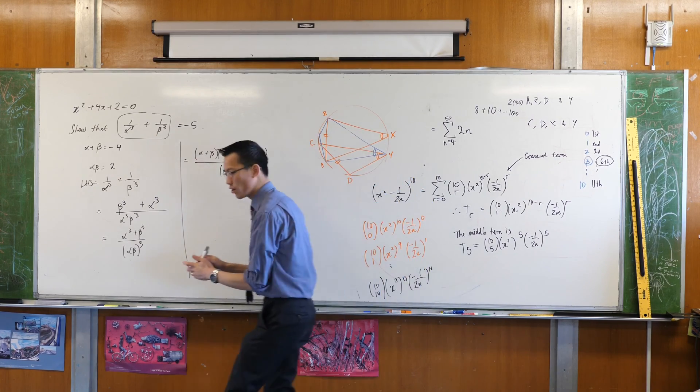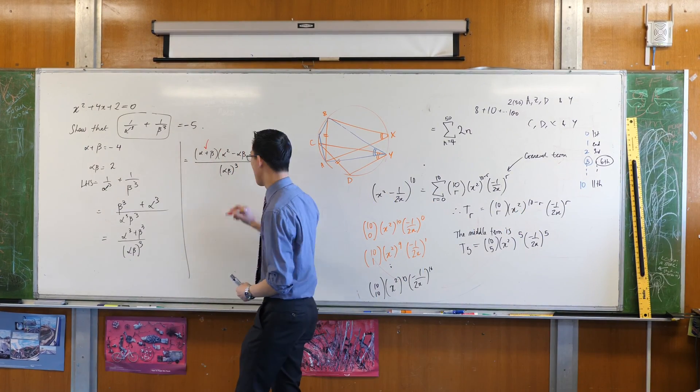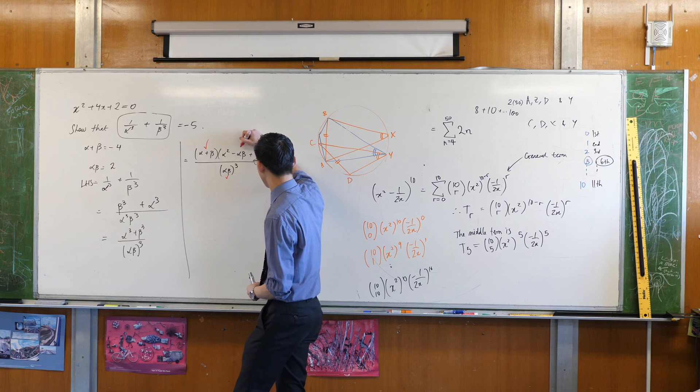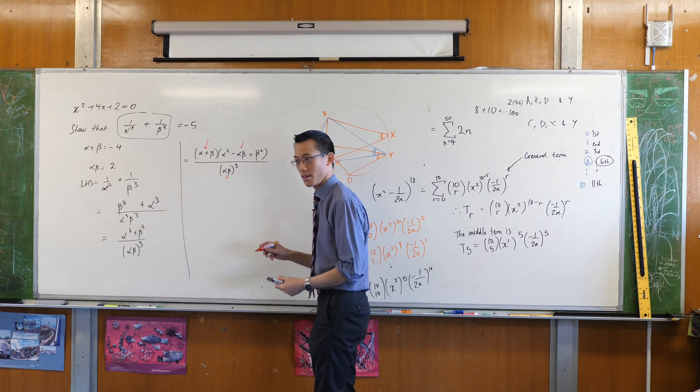Now this is really good because I know what alpha plus beta is. I know what alpha beta is. There's another alpha beta here. And so all that's left is what do I do with these guys?